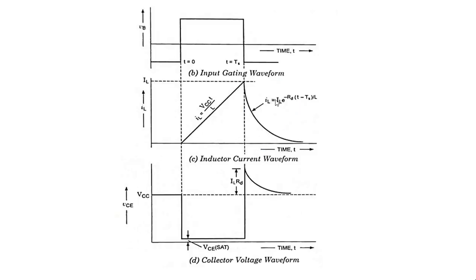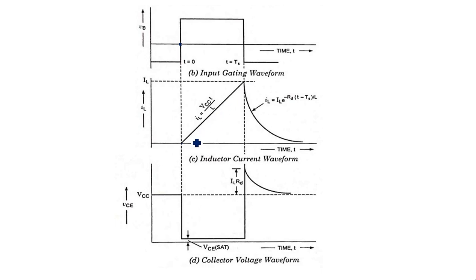Looking at the waveforms: this is the input waveform applied at the base of the transistor. When t = 0 and the transistor comes into the ON state, current flows through the inductor in a linear fashion. The output is taken across the inductor, and the charging and discharging of the inductor produces the output waveform.